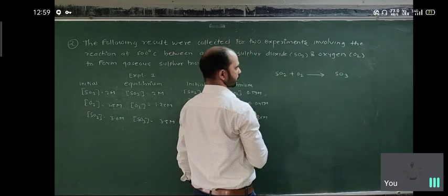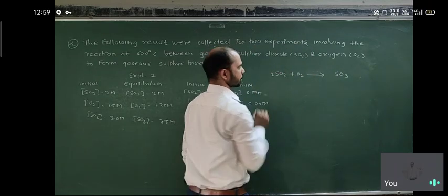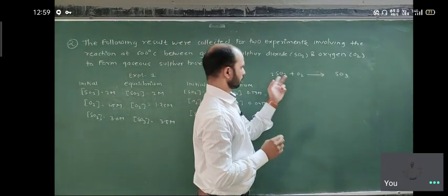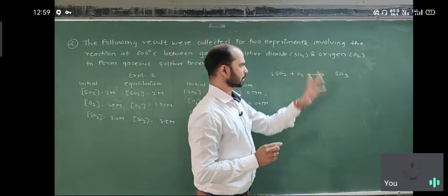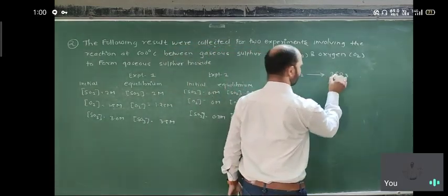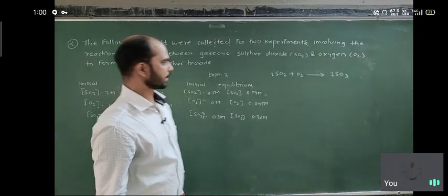To balance this reaction, we need twice SO₂ plus O₂ gives twice SO₃. This is the balanced reaction.